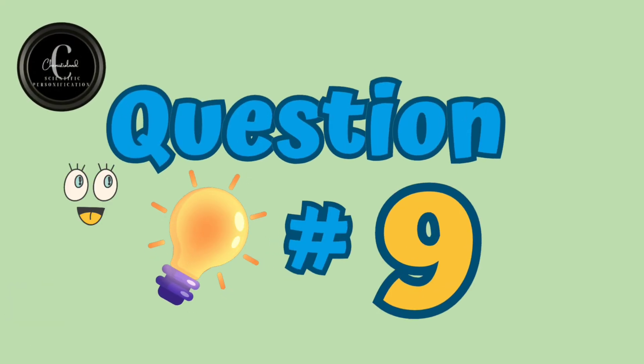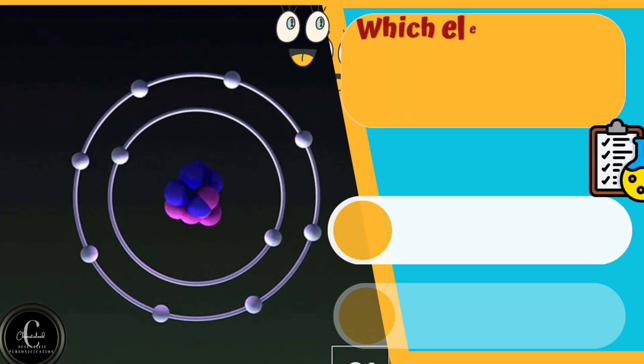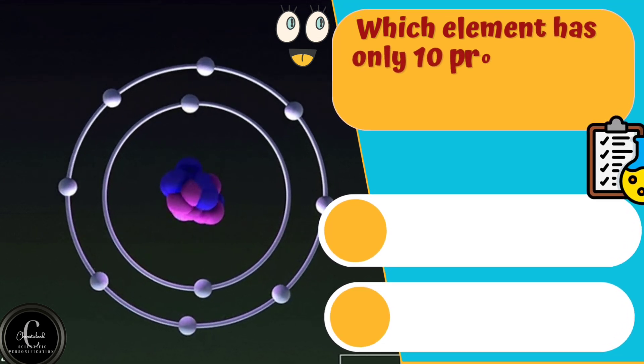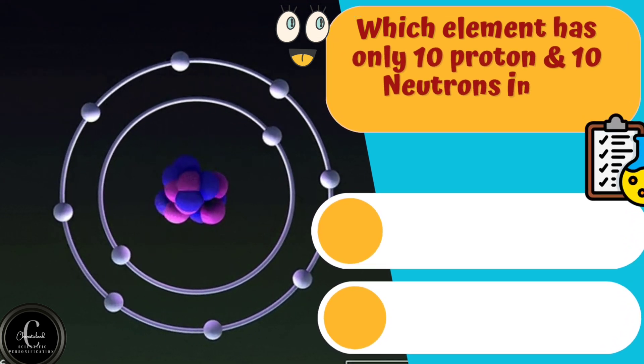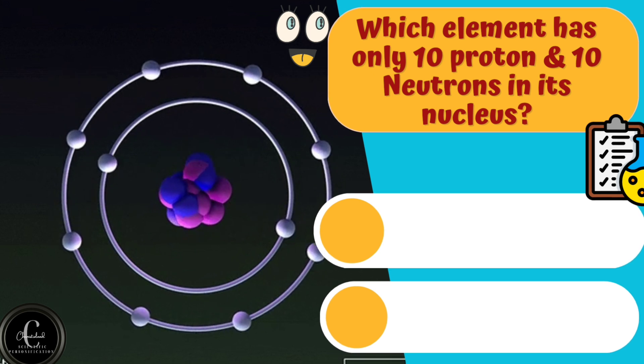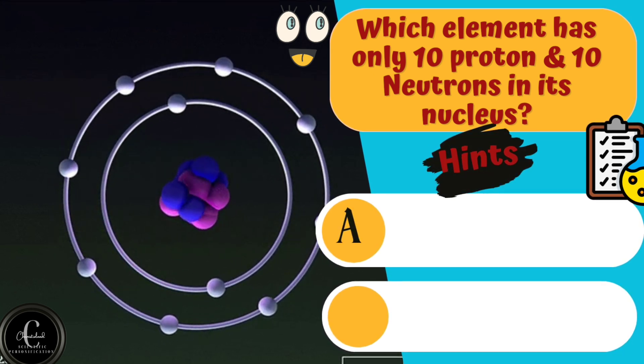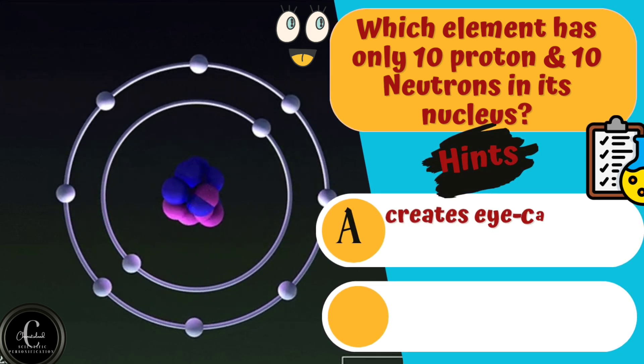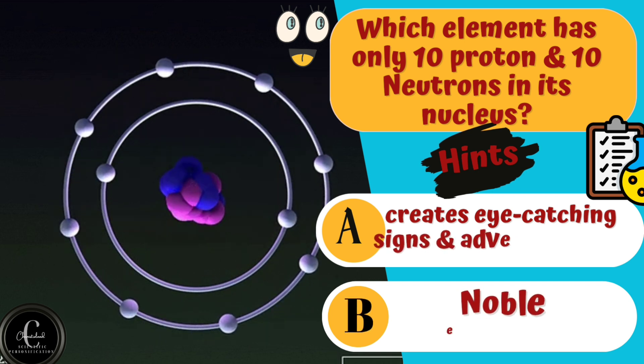Now, the glowing question number nine. Which element has ten protons and ten neutrons in its nucleus? Hints are A. Creates eye-catching signs and advertisements. B. Noble element.